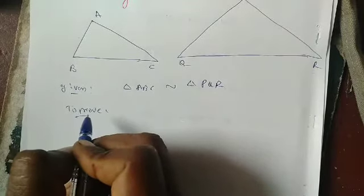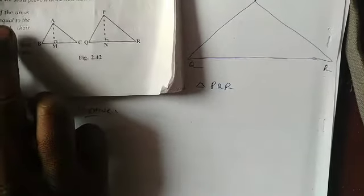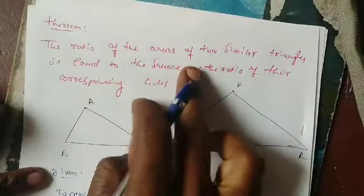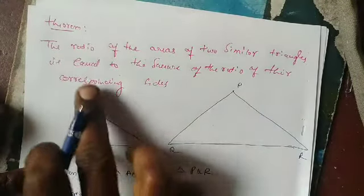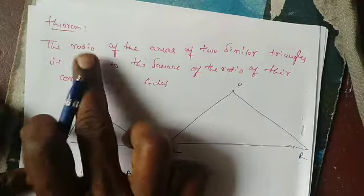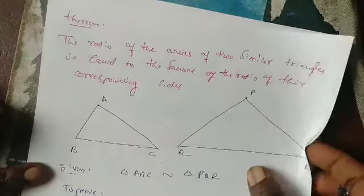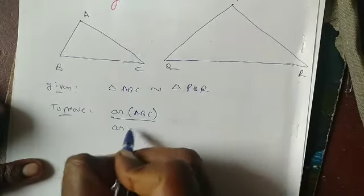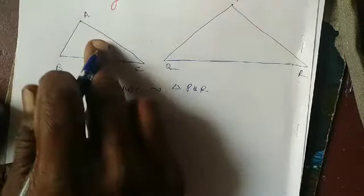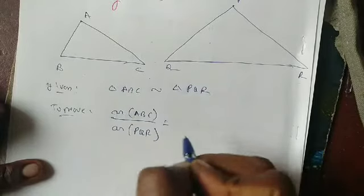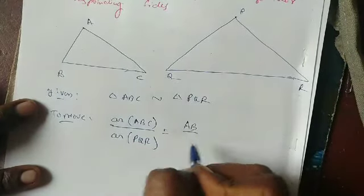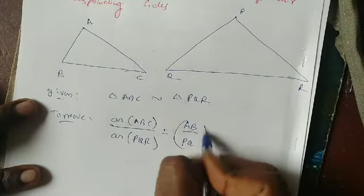To prove: the ratio of the areas of the similar triangles. The ratio of the area of triangle ABC to the area of triangle PQR is equal to the square of the corresponding sides — (AB/PQ) squared.